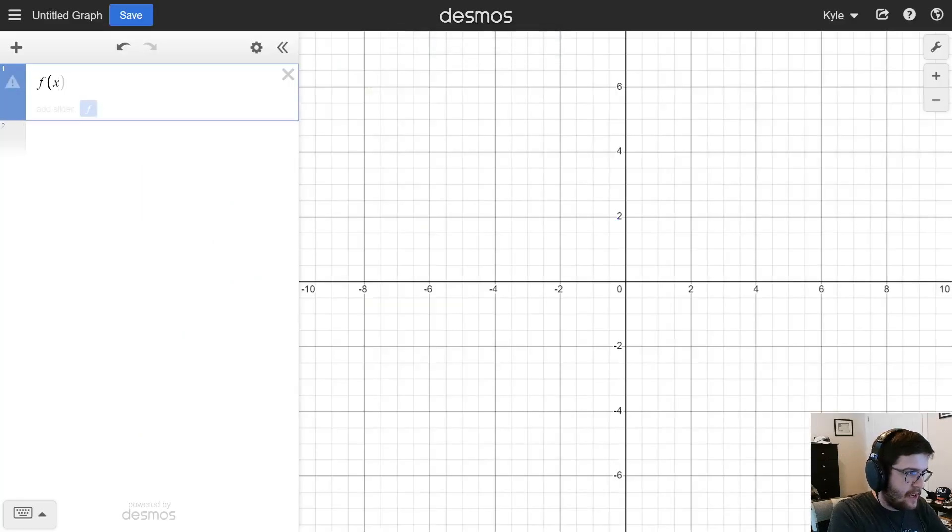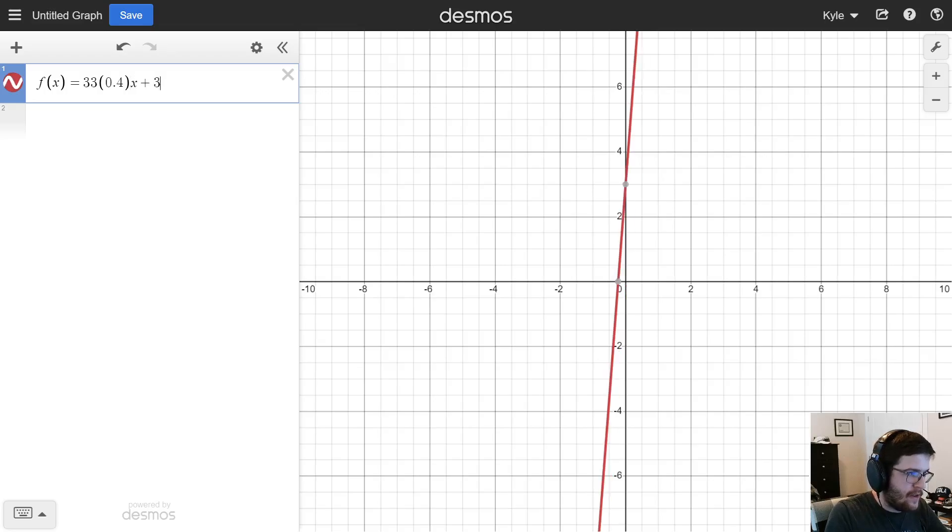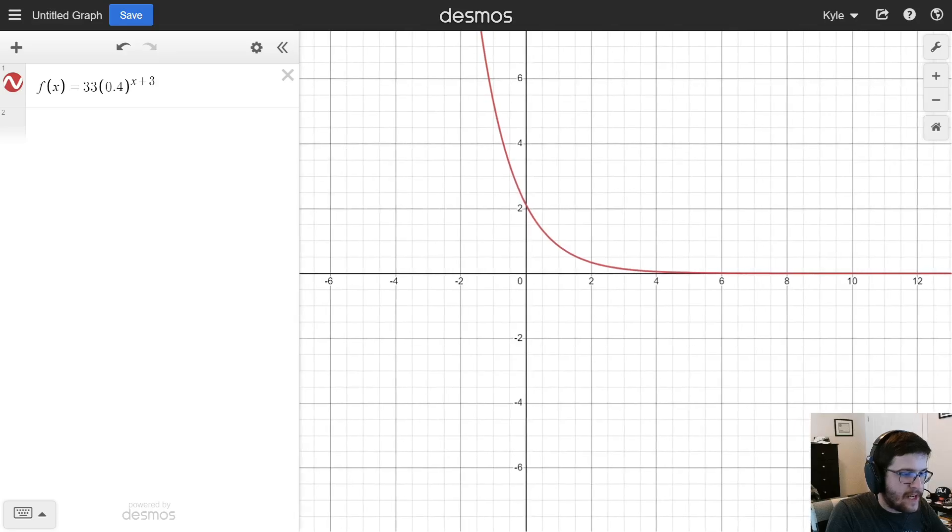Okay, so first I'm going to type in f(x) equals 33(0.4)^(x+3). And if you go and try to type in x plus 3, it's going to automatically exit out of it. So, you either have to put parentheses around it like that. Or, a cool little trick you can do is you can just write x plus 3 kind of on the ground level, highlight it, and then press the exponent button shift 6. And it'll put it up there. And then I can press tab to exit that or the right arrow key. Okay, so 33(0.4)^(x+3).